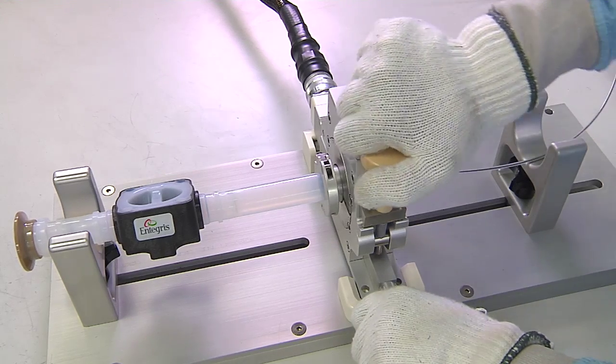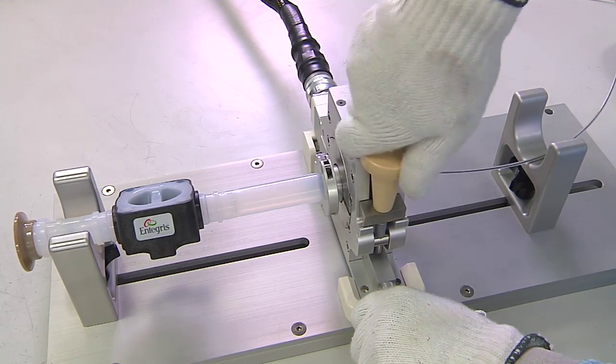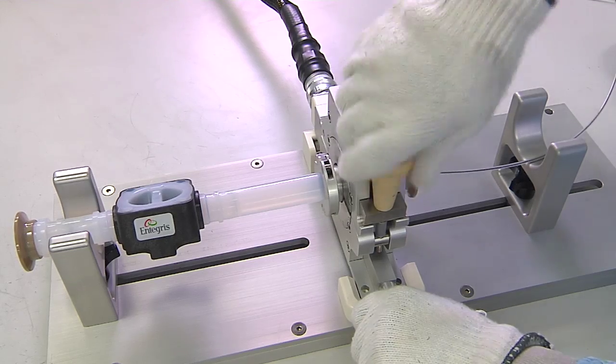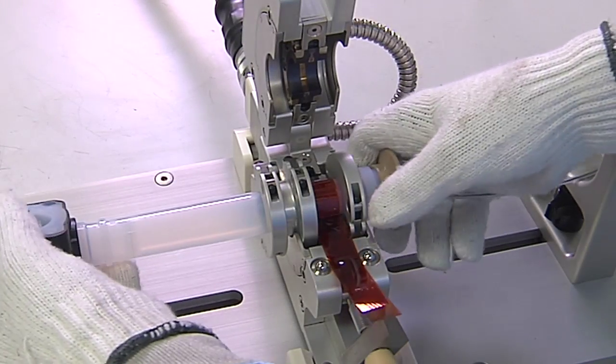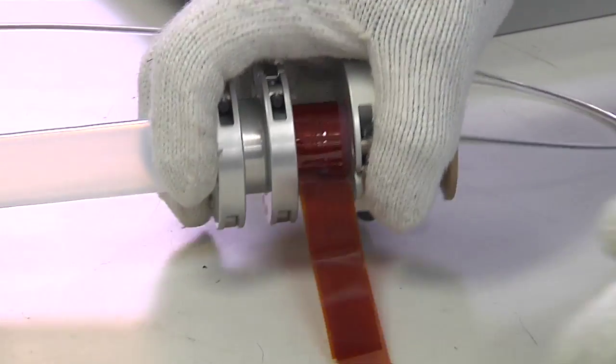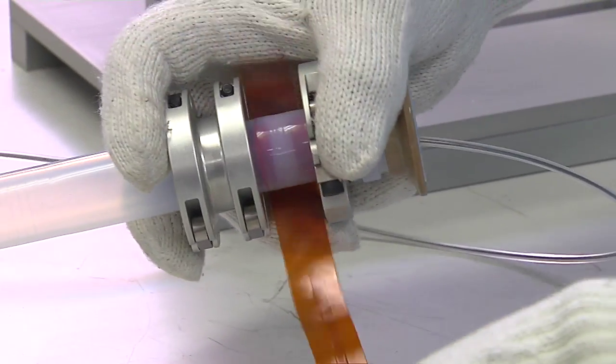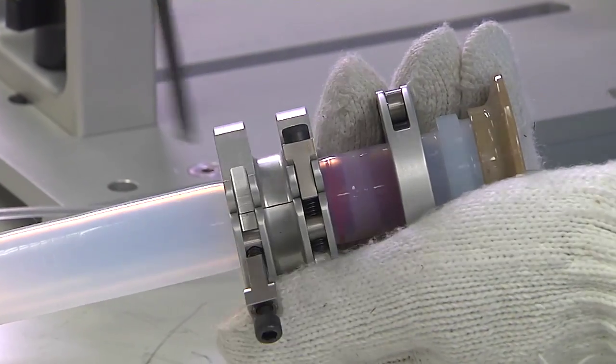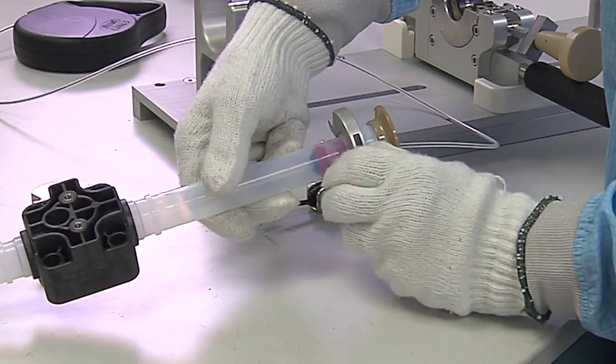The weld head can now be opened. Thermally insulated gloves should be used as the weld head and components will be hot. Remove the Kapton film from the weld region.